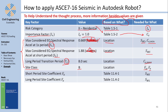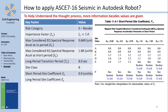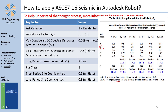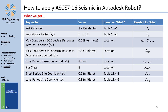If you are overwhelmed by these symbols, pause and check the first video in the series where they are all explained. The short-period site coefficient Fa is taken from Table 11.4-1. Entering with site class B and Ss = 1.88 (which is above 1.5), Fa = 0.9. The long-period site coefficient Fv is from Table 11.4-2. Entering with site class B and S1 = 0.669, Fv = 0.8. Both Fa and Fv are needed to compute Sms and Sm1.